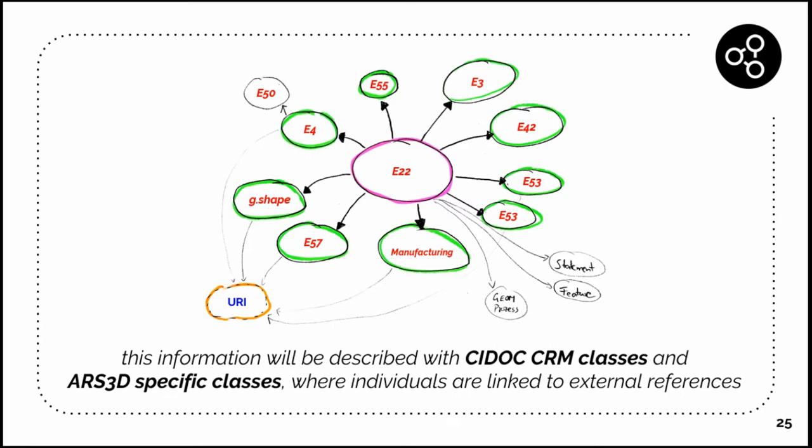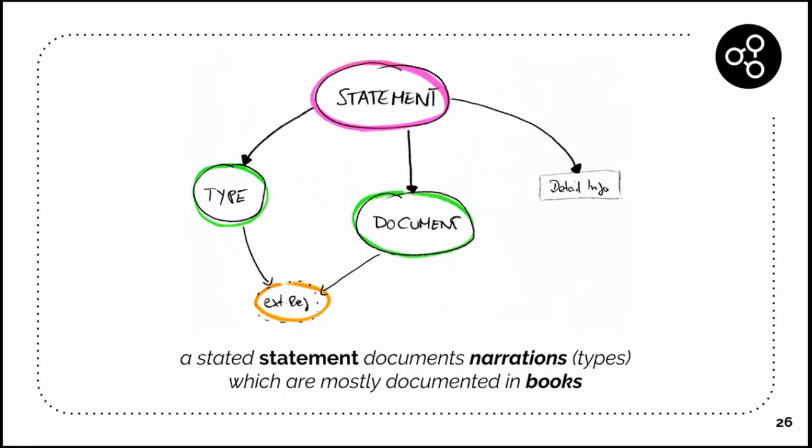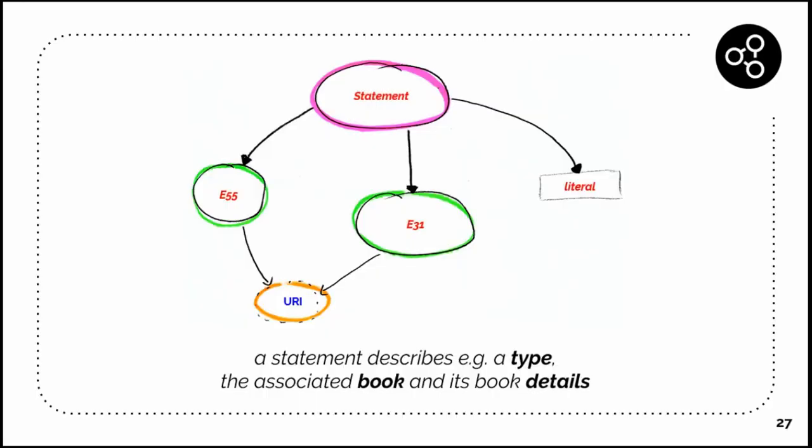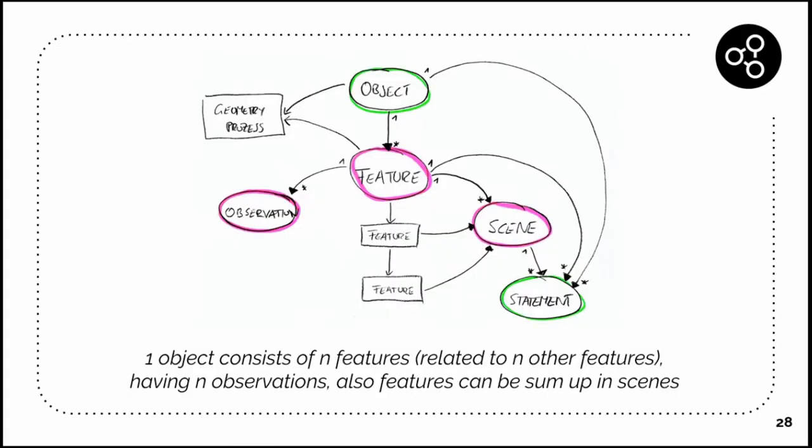We also added a statement that documents some narration, normally types which are mostly documented in books. We have a statement which is referring to a type and to a book, and this is normally linked to an external resource. One important thing is that one object consists of several features which can be related to other features, and these are having observations. Features can be summed up also in some kind of scene in the end.